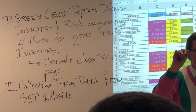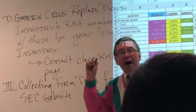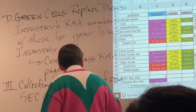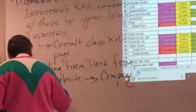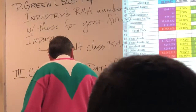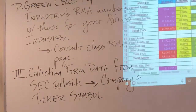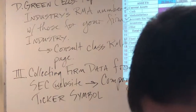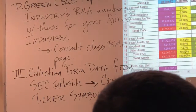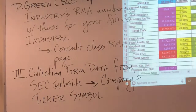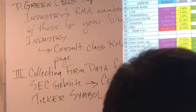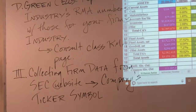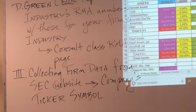You pick your company, find your company's ticker symbol — that'll be the easiest way to look them up on the SEC's website. These are ticker symbols: Humana, Amazon, Lamar Advertising, Humanasys, Apple. Dick's is DKS. So find your ticker symbol; that's the easiest way to look them up.